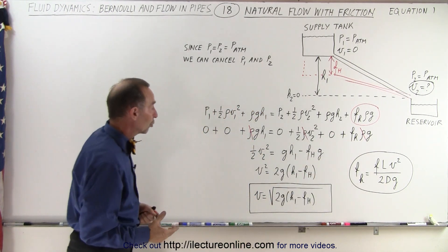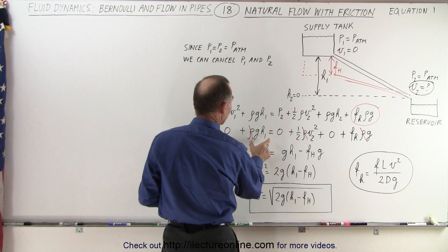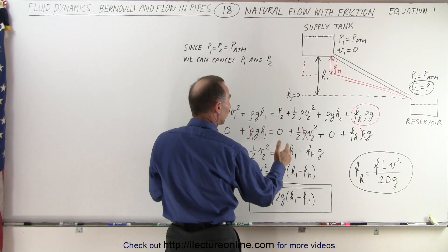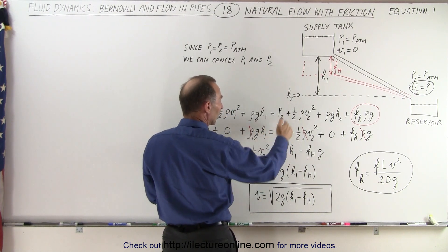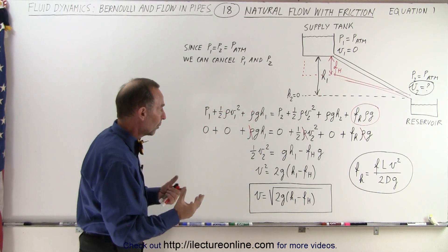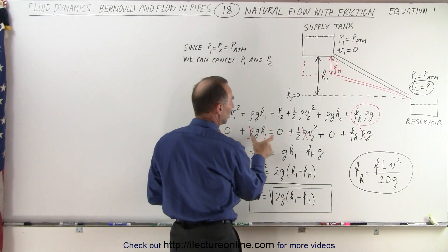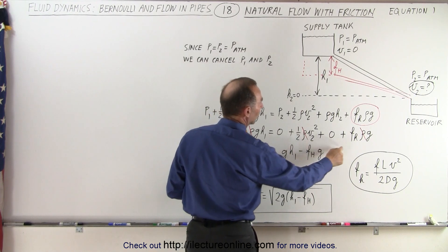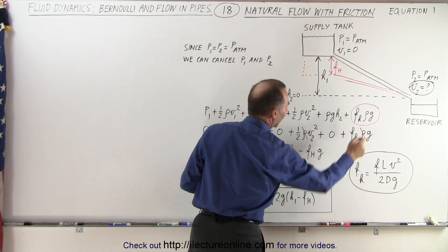If we then keep the remaining terms, we just have three of them: it'll be gh1. And by the way, once we do that, we can get rid of the density from all the terms. So what we have left is gh1 plus one-half v2 squared plus the frictional head loss times g.